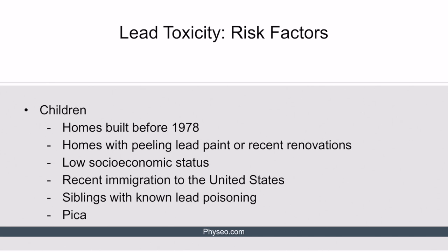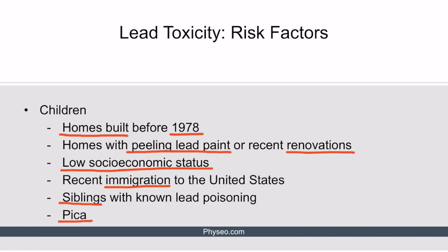In children, risk factors for lead poisoning include homes built before 1978, homes with peeling lead paint or recent renovations, low socioeconomic status, recent immigration to the United States, siblings with known lead poisoning, and pica. Homes built before 1978 are more likely to have been built with lead-based paint. Low socioeconomic status and recent immigration increase the likelihood of living in older buildings. Pica is an eating disorder describing consumption of items with no nutritional value, such as dirt or paint chips. Presence of any of these risk factors warrants screening with a venous lead level.